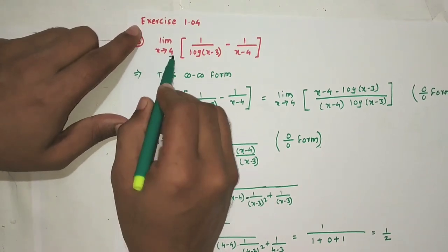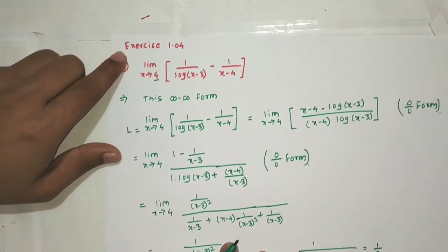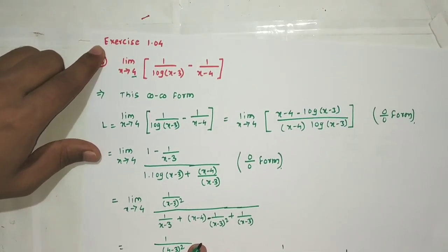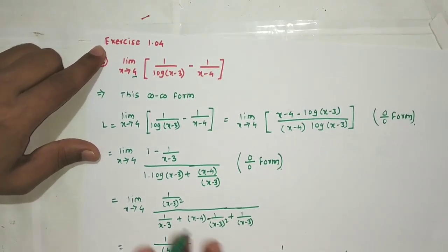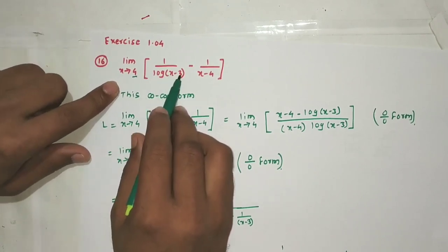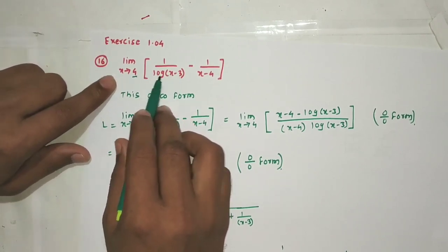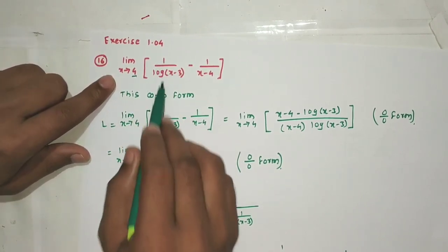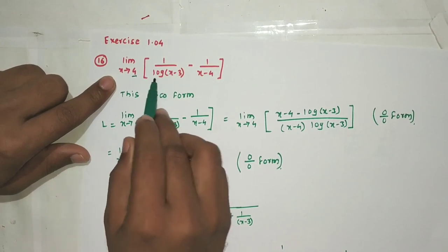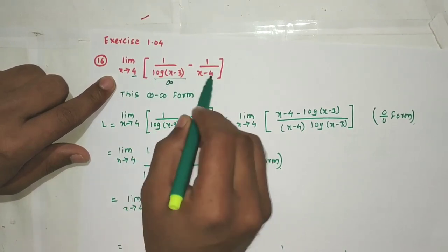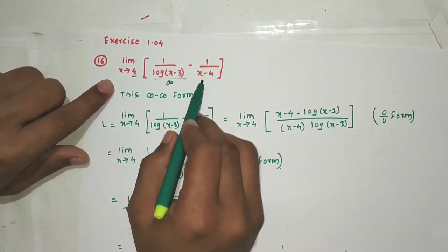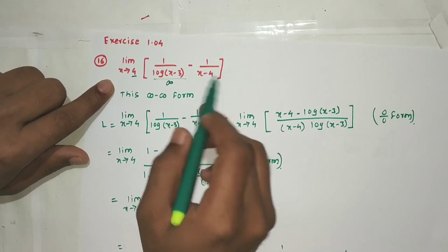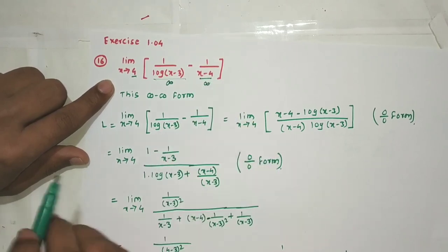We identify the form: putting x=4, we get log(4-3) = log(1) = 0, so 1/log(x-3) = 1/0 = infinity. Also 4-4=0, so 1/(x-4) = 1/0 = infinity. This is infinity minus infinity form.